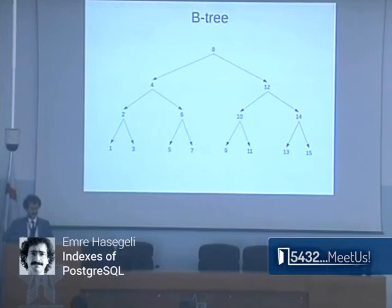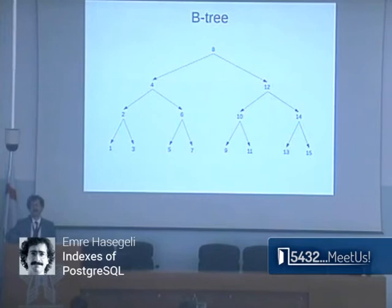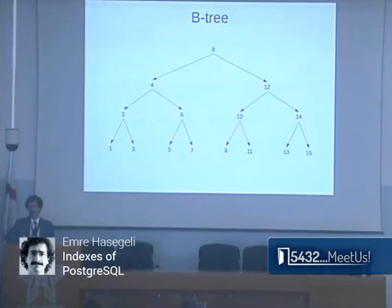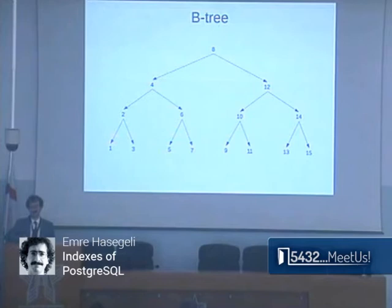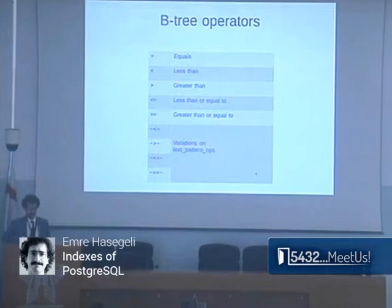B-tree is the default index — everybody is familiar with how it works. It puts values in order into a tree. It's the only option if you need the index to be a primary key or unique key. It's fast, well-optimized for most use cases. When you have multiple columns, it's like B-trees under B-trees, so column order matters a lot. The supported operators include less than, greater than, and equality — and it supports ORDER BY.